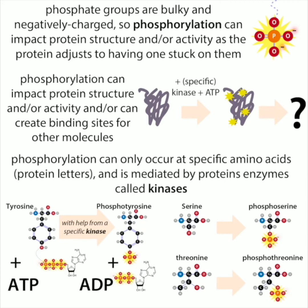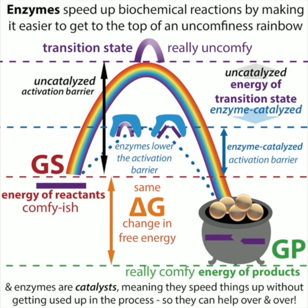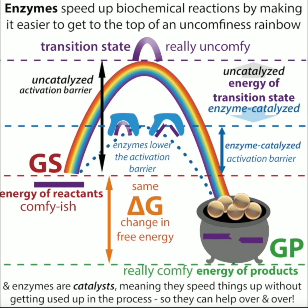A substrate is something that an enzyme acts on, and a kinase is an enzyme — meaning it can speed up a biochemical reaction without getting used up itself. It doesn't change the beginning or final products, it just makes the transition easier by lowering what we call the activation barrier. Think of a rainbow with a pot of gold on one side — you have to get over the top, and the enzyme makes that rainbow shorter. It often does this by stabilizing the transition state. Imagine snapping a stick: right in the middle before it snaps, it's really tense and uncomfortable — the enzyme makes that easier.